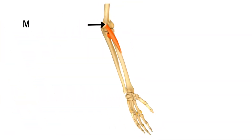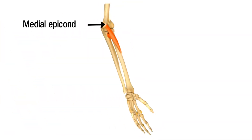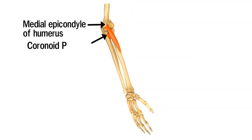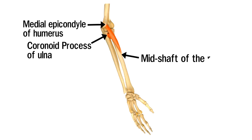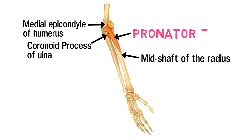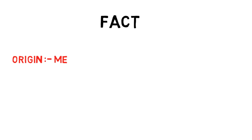So this is the medial epicondyle of the humerus, and this is the coronoid process of the ulna — both of these are the points of origin of this muscle. This is the mid shaft of the radius, the point of insertion. So this muscle is the pronator teres. A fact about the origin of all the muscles of the superficial layer in the anterior group is that they originate from the medial epicondyle of the humerus.